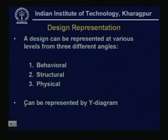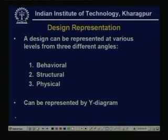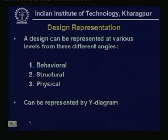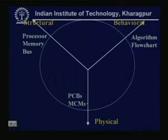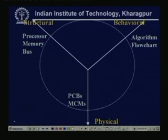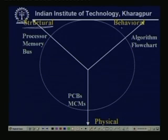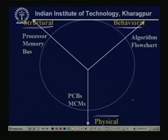Design can be represented at various levels from three different angles: it can be behavioral, structural, or physical. These three can be represented by the very popular Y diagram. This is a Y diagram and the three arms are: structural, behavioral, and physical. We want the physical representation. Structural is where the user has enough idea of the design and the design is represented or realized using processor and memory — it is a network of memory, processor, and so on. These are called structural.